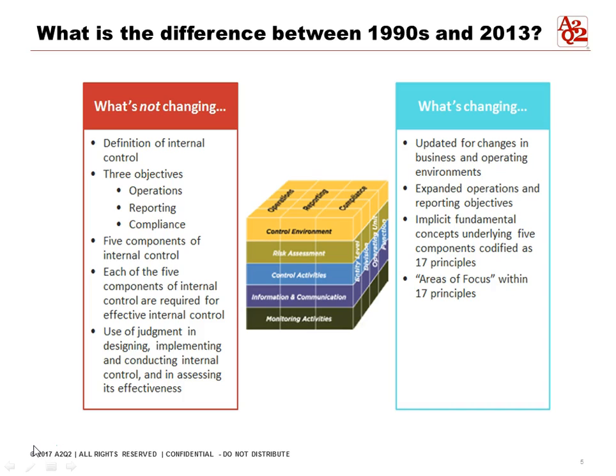What's not changing is the definition of internal controls. There are still three objectives. Looking horizontally, it's around operations, reporting, and compliance. SOX is just one component of compliance, but compliance can include HIPAA and all sorts of things. The five components of internal controls — control environment, risk assessment, control activities, information and communication, and monitoring activities — those are still the same.